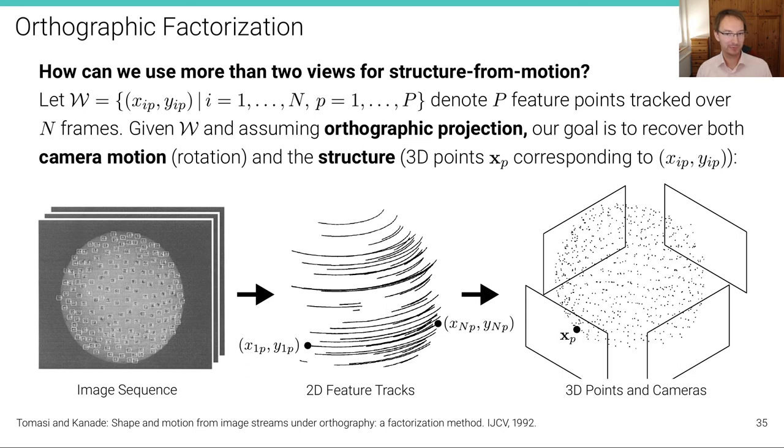So how can we use more than two views for structure from motion? Let's assume that W contains these image coordinates for features that are tracked across several frames. So here we have N frames or cameras, and P are the number of feature points. Let's say we have 100 features and they are tracked over 10 cameras. We assume here always full tracks. Every feature is visible in every camera.